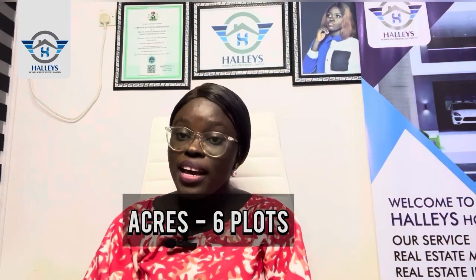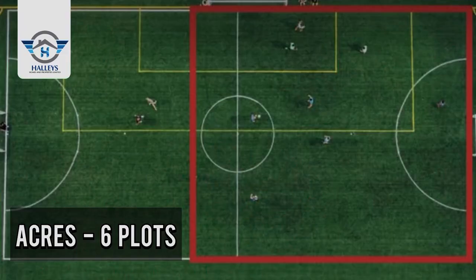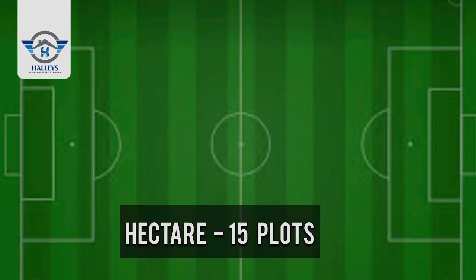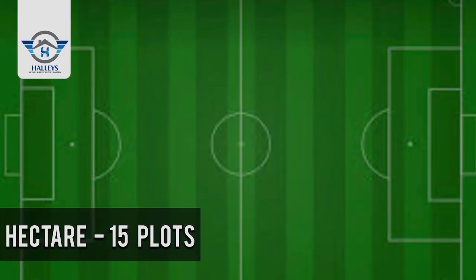Moving on to acres: one acre consists of six plots, which is roughly the size of a standard football pitch. So once you are going for six plots of land, just know that you are actually buying one acre.